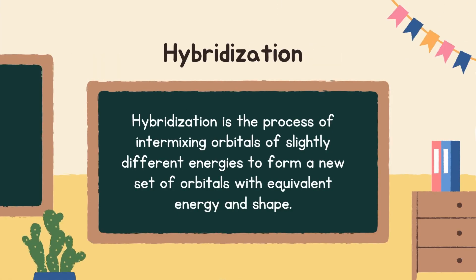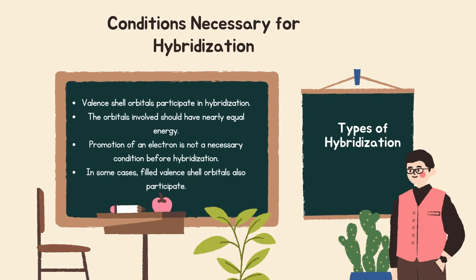Next is hybridization. Hybridization is the process of intermixing orbitals of slightly different energies to form a new set of orbitals with equivalent energy and shape. Conditions necessary for hybridization: Valence shell orbitals participate in hybridization. The orbitals involved should have nearly equal energy. Promotion of an electron is not a necessary condition before hybridization. In some cases, filled valence shell orbitals also participate.